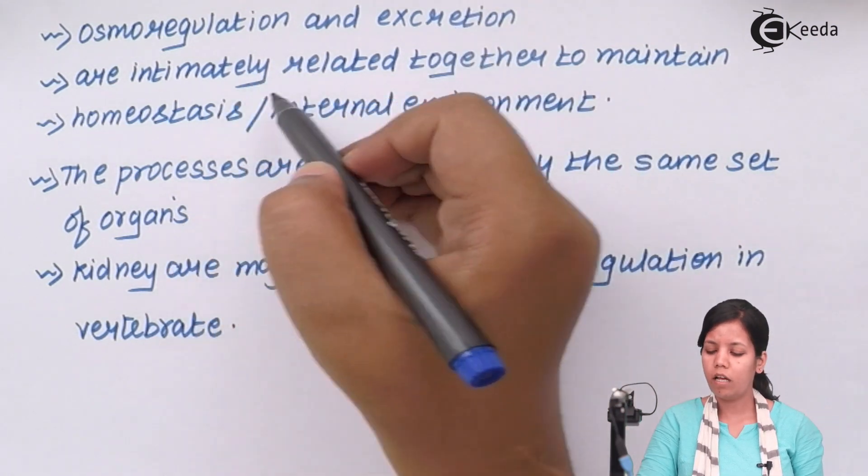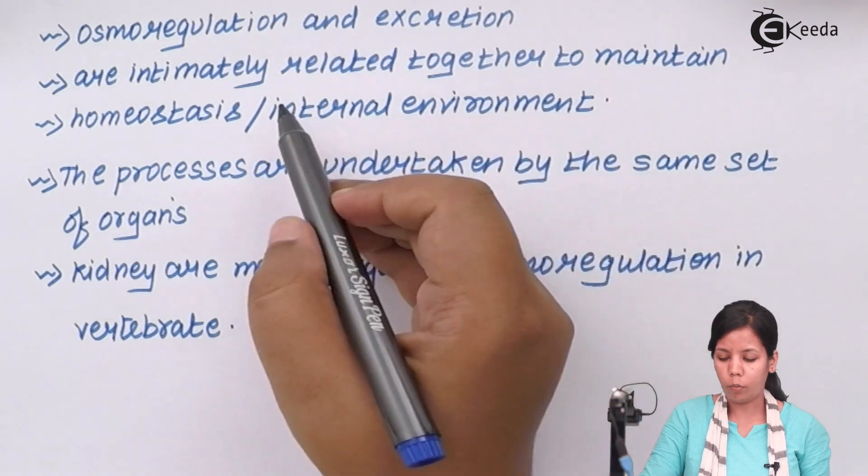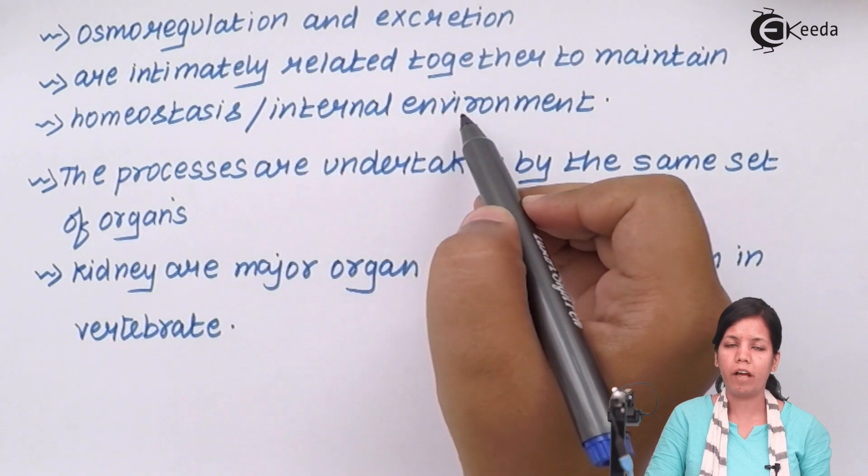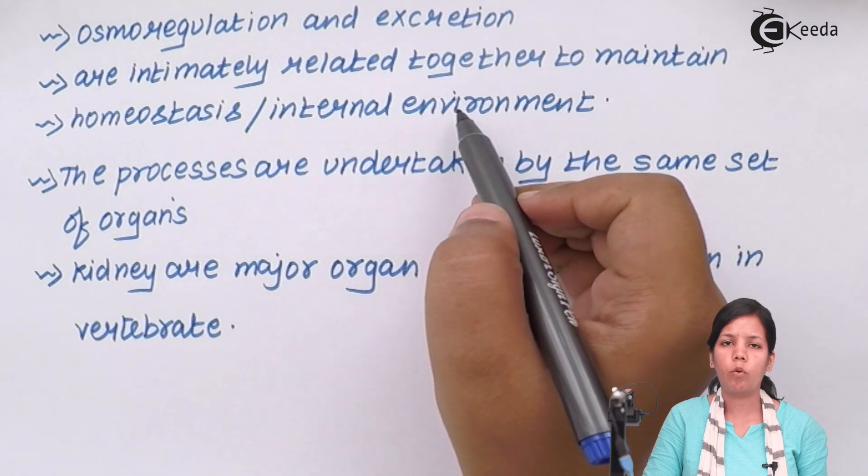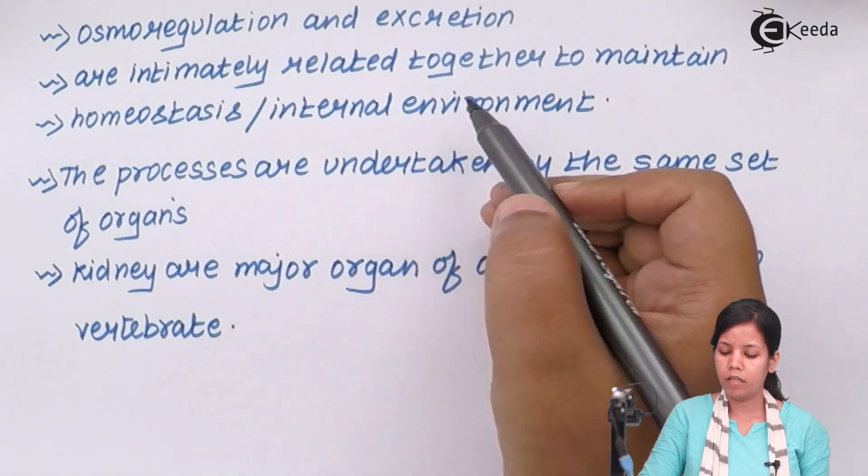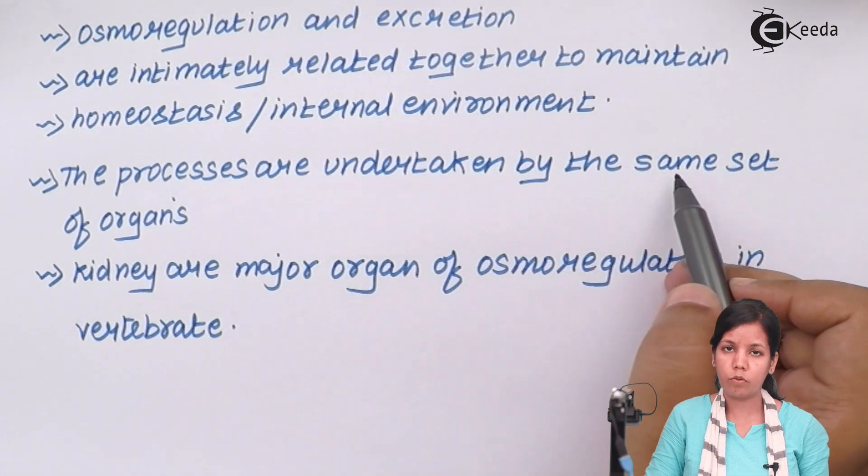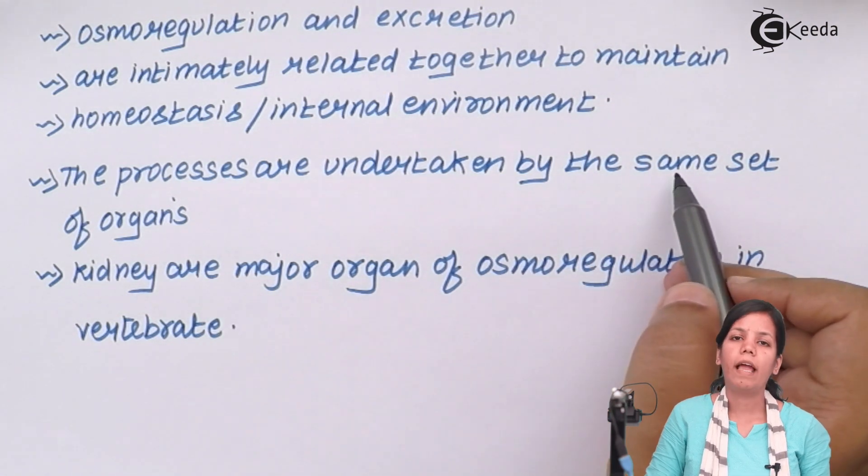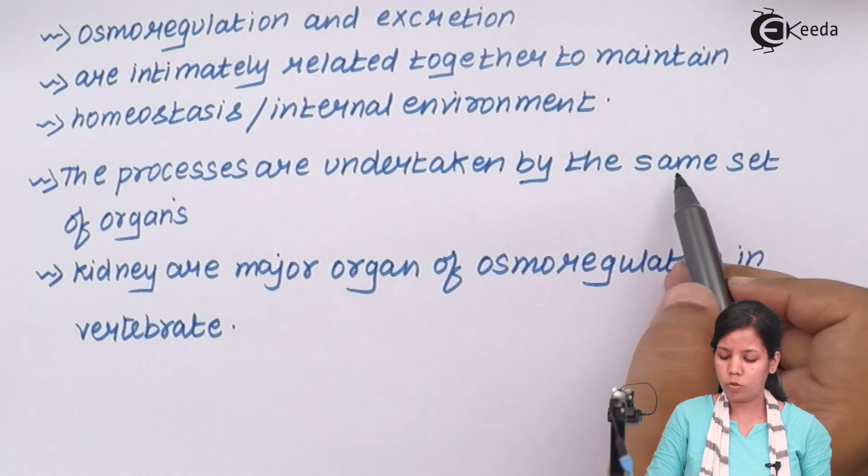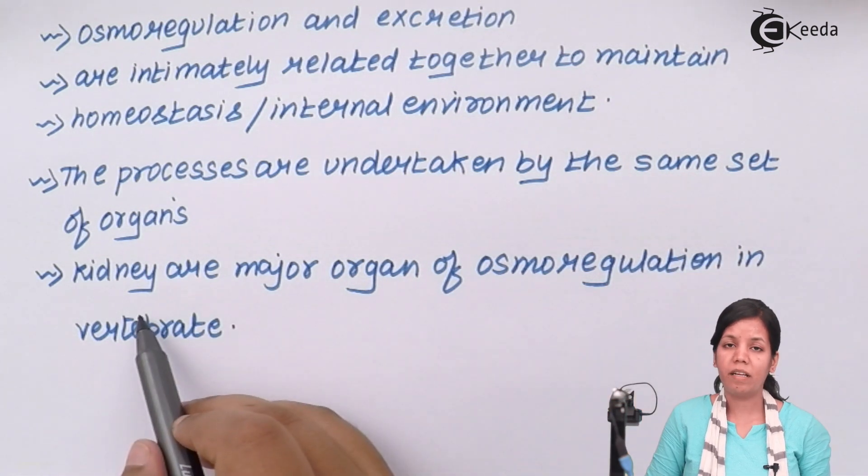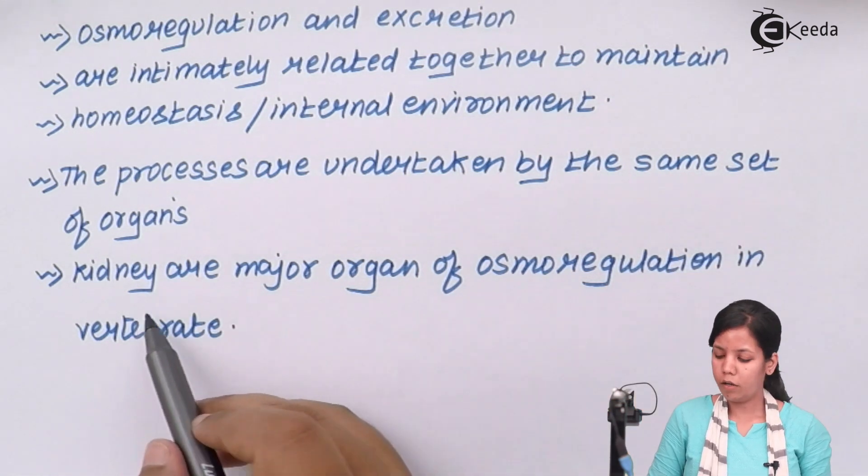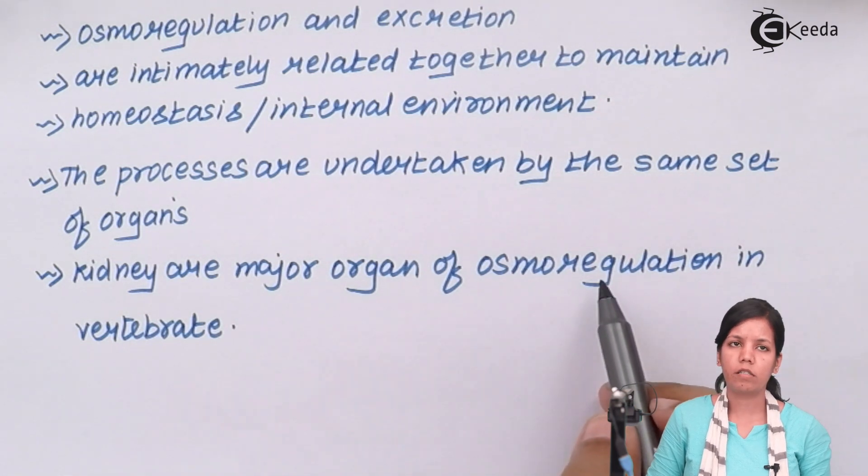Osmoregulation and excretion are intimately related together to maintain homeostasis or internal environment constant, that is the proportion of salt and water has to be very constant. Now these processes are undertaken by the same set of organs that are responsible during the process of excretion, and also your kidneys they play a very crucial part during the process of osmoregulation in vertebrates.